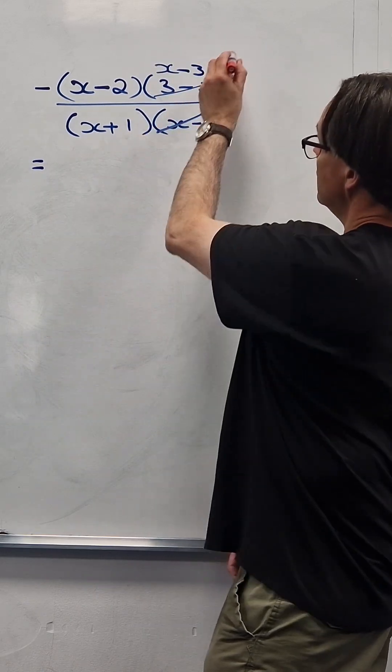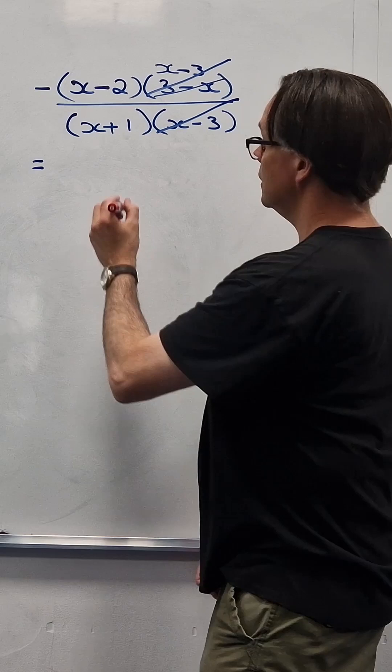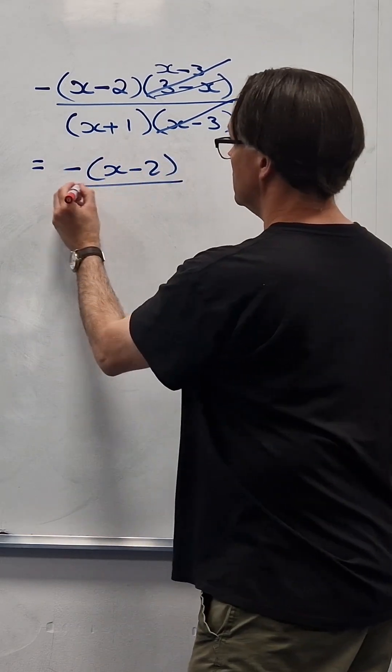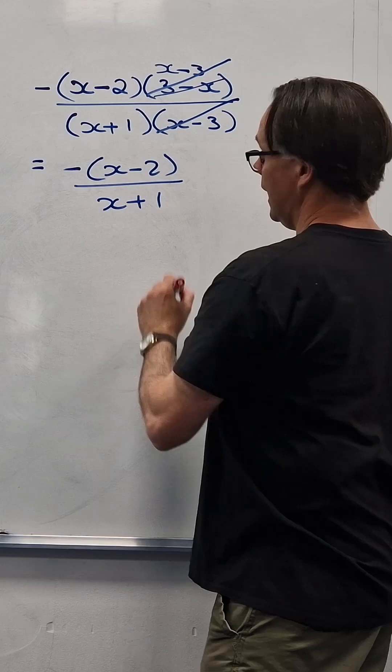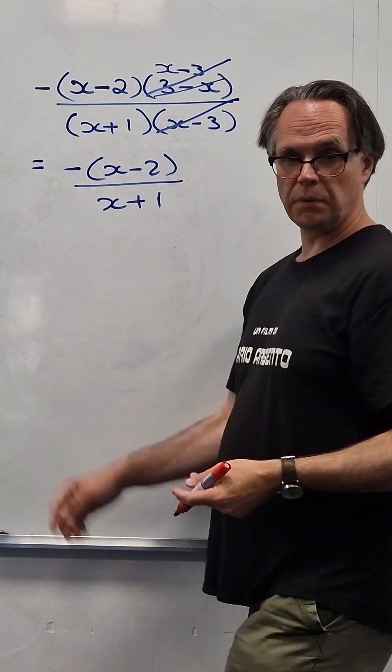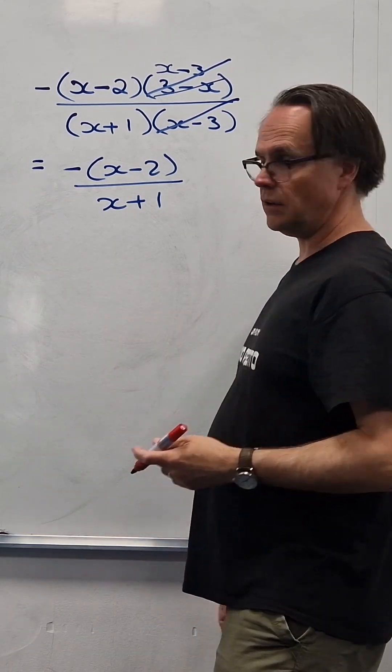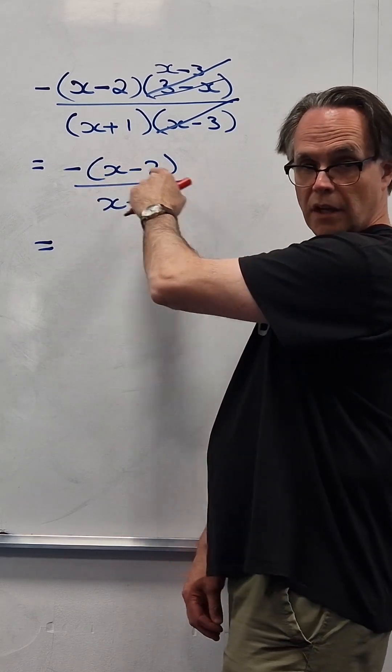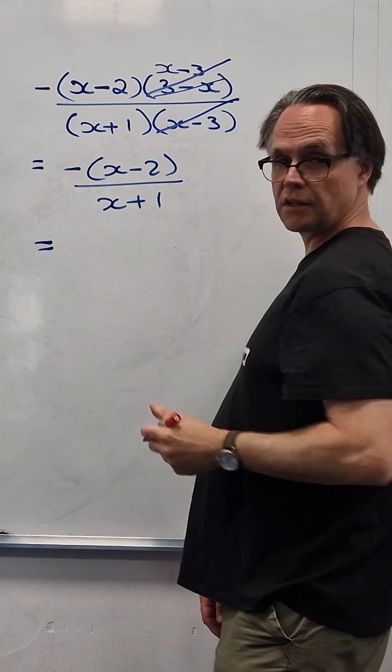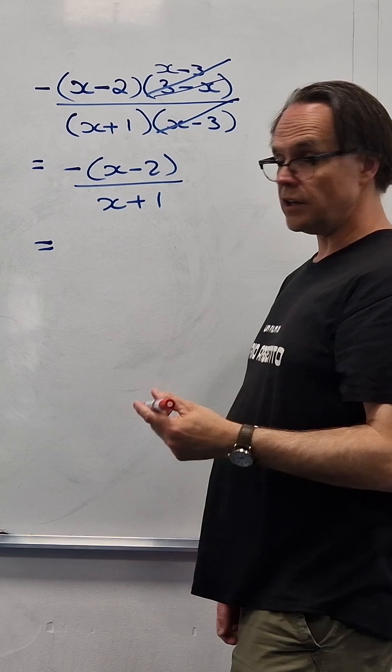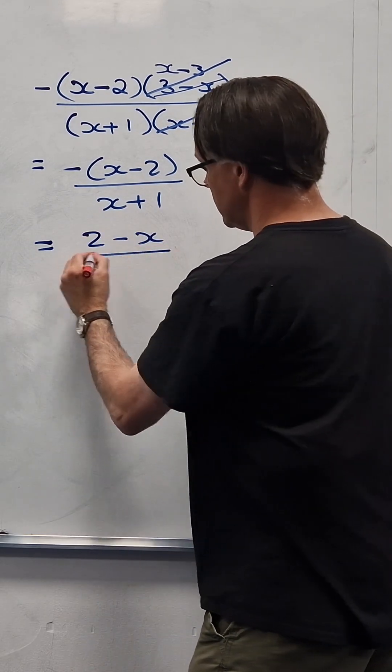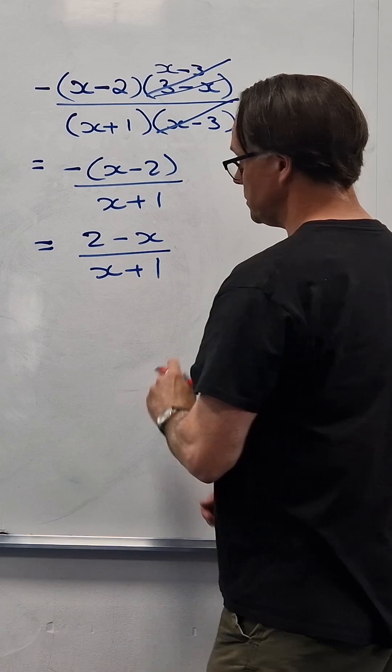And then you can cancel those two brackets out which gives us minus x minus 2 over x plus 1. And if you don't like that minus being outside because it's always better if they're not, remember the fact that if you multiply a subtraction by minus 1 all that does is it just reverses the subtraction so that just becomes 2 minus x over x plus 1 and we're done.